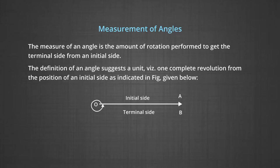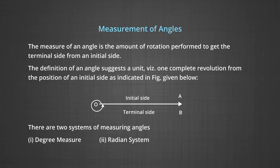The measure of an angle is the amount of rotation performed to get the terminal side from the initial side. The definition of an angle suggests a unit which could be one complete revolution from the position of the initial side to the terminal side. There are two systems of measuring the angles: the first one is the degree measure and the second one is the radian system.